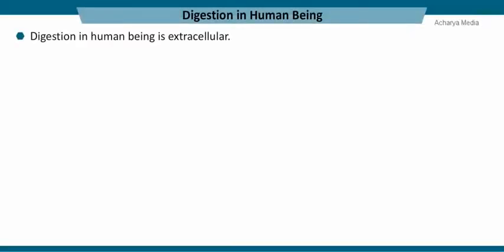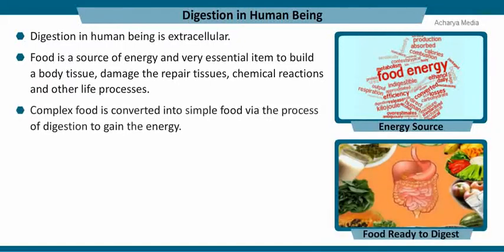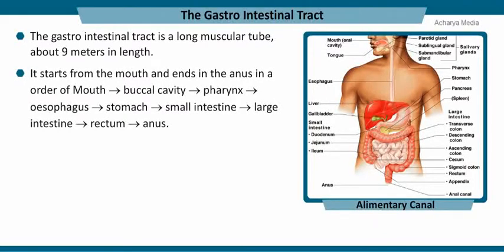Digestion in human beings is extracellular. Food is a source of energy and a very essential item to build body tissue and to repair damaged tissues. Complex food is converted into simple food via the process of digestion to gain energy. The gastrointestinal tract is a long muscular tube about 9 meters in length.